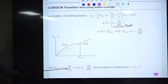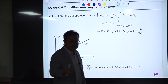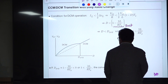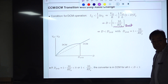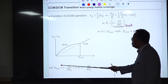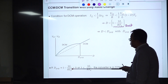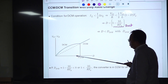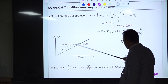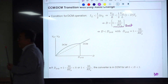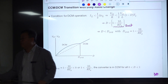If D-critical is an imaginary or negative value, there is no real positive D-critical, so the converter remains always in CCM regardless of the value of D. This is also an important design consideration.